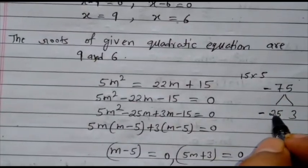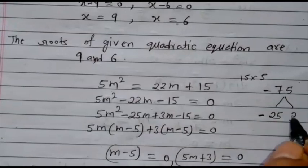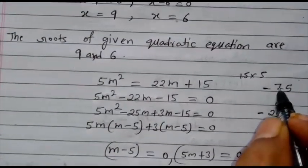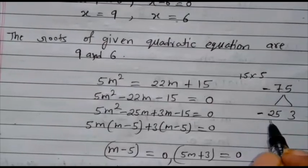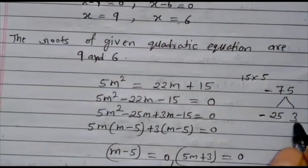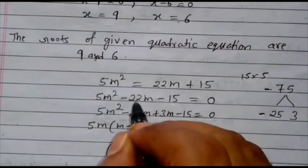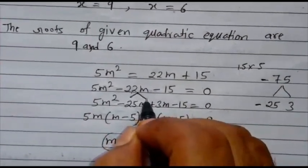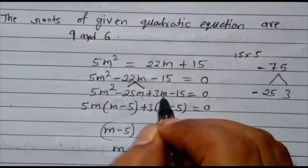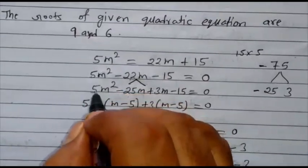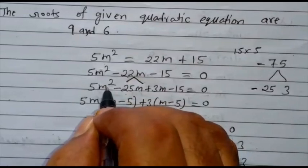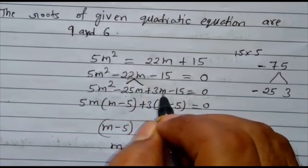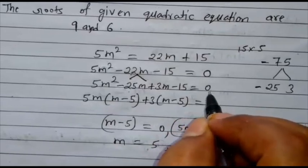Try to find the factors of minus 75. What is the factor? 25 multiplied by 3. Check: minus 25 plus 3 gives minus 22 — that is the middle term. So the factors of minus 22m are minus 25m plus 3m. Write down: 5m² minus 25m plus 3m minus 15 equals 0.